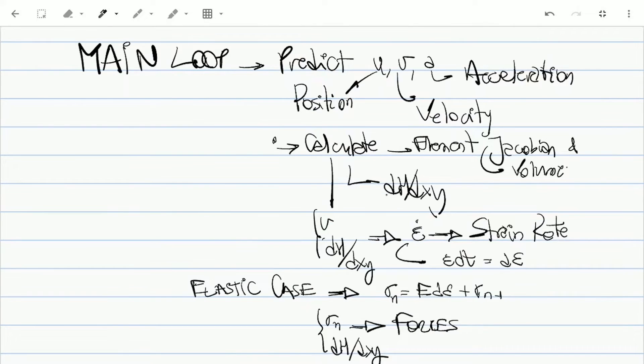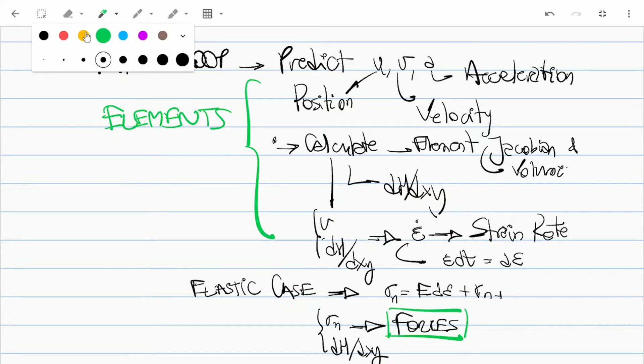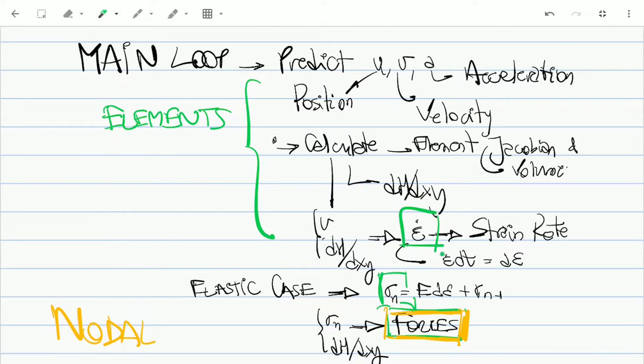The strain rates are then integrated and used to calculate element stresses, which in our example are obtained by the elastic modulus. And finally, together with again our shape derivatives, results in element nodal forces, which will be assembled to obtain the global nodal forces.